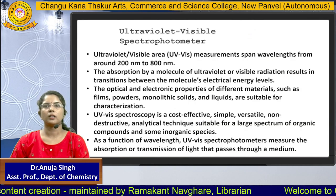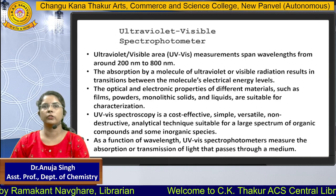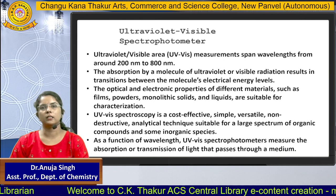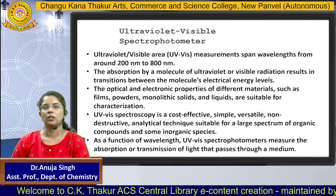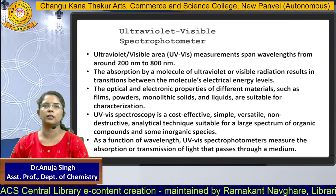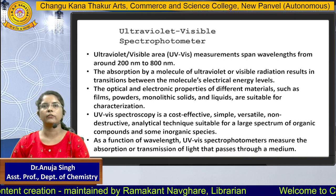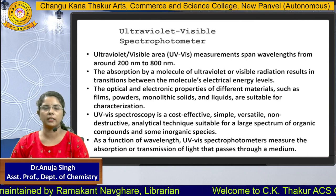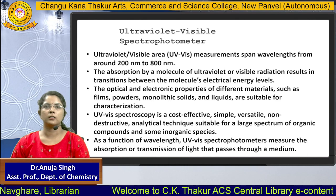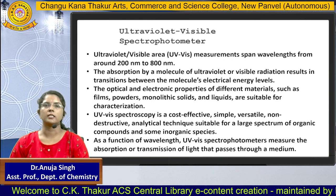Coming to the principle of this spectroscopy — UV Visible ranges from 200 to 800 nanometers, and here we are calculating the analyte concentration. When light falls on a molecule, the molecule absorbs that light and goes from the ground state to the excited state — that is known as the absorption process. From the excited state, the molecule comes back to the ground state — that is known as emission. In absorption, we calculate the term absorbance, which is the reciprocal of transmittance.